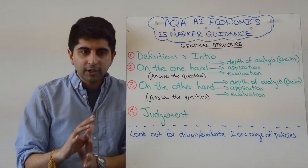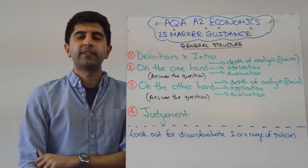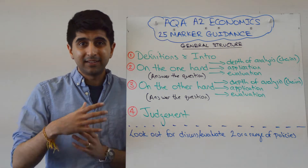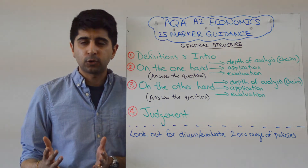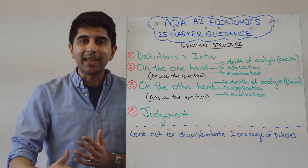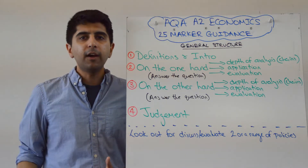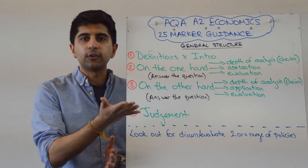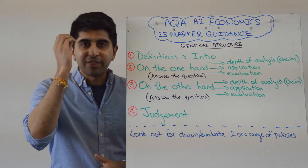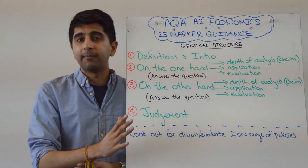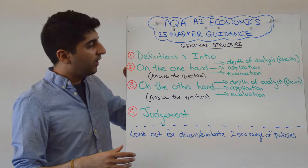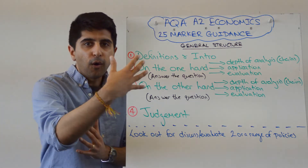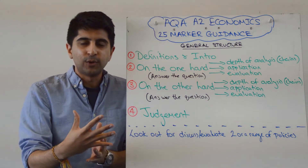Don't waste any time. What are you trying to do on these 25 markers? You are trying to form an argument. It's a discuss or evaluate based question, and it requires you to make an argument. When you make an argument, you need to give two sides — no argument is complete without two sides. That's what your job is on a 25 marker. Simple as that. You would then say, on the one hand, here's the argument on one side.